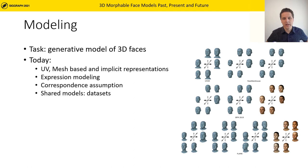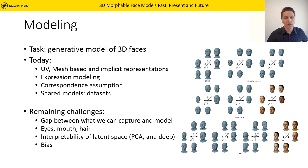Whilst the classical model was built using PCA and based on a cylindrical representation, there were several improvements over the years. The community found that not only facial identity can be modeled, but also added facial expression to the generative model. In recent years, more and more 3D morphable models became publicly available, enabling the community to explore different modeling strategies. However, there is still a big gap between what we can capture and what we can model, especially for regions like the eyes, mouth, and hair, which need special focus.